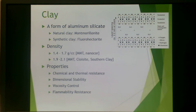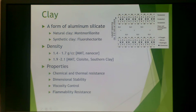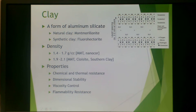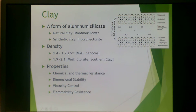Clays are also used as filler. These are a form of aluminum silicate. There are natural clays, which is montmorillonite, and synthetic clays, which is fluorohectorite. Shown here is a schematic of natural clay, montmorillonite. You can see the different layers consisting of oxygen (in gray), silicon atoms in white, and hydrogen and aluminum. They are often in layered structures like a deck of cards.